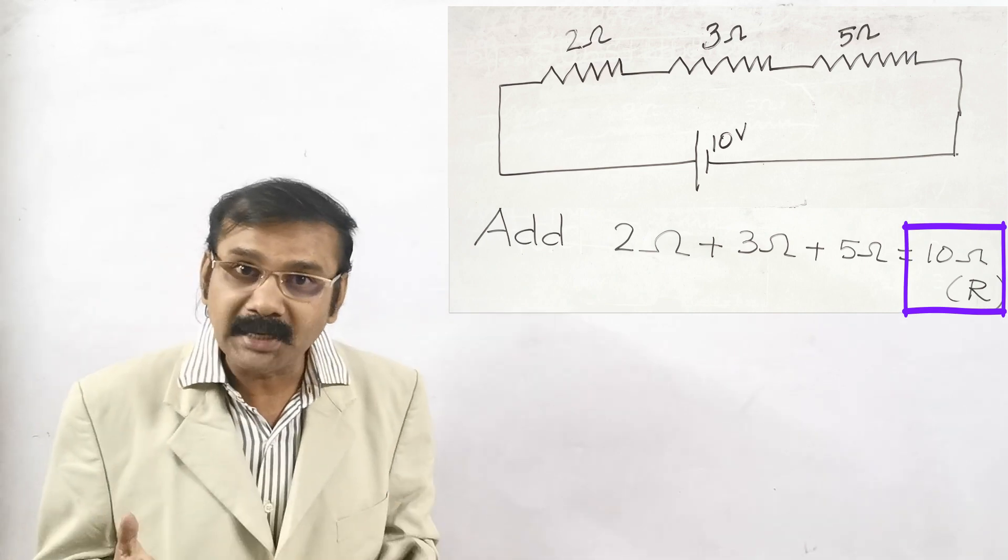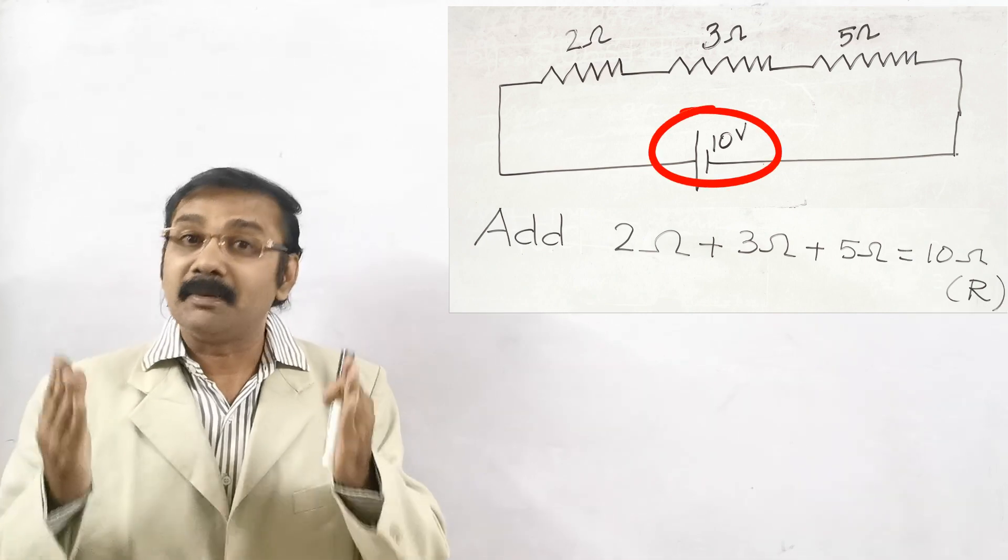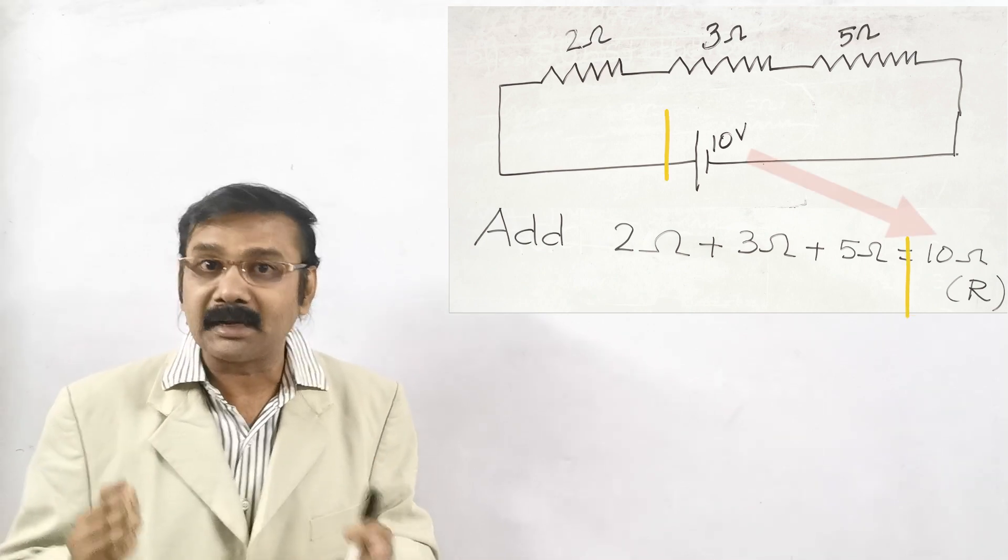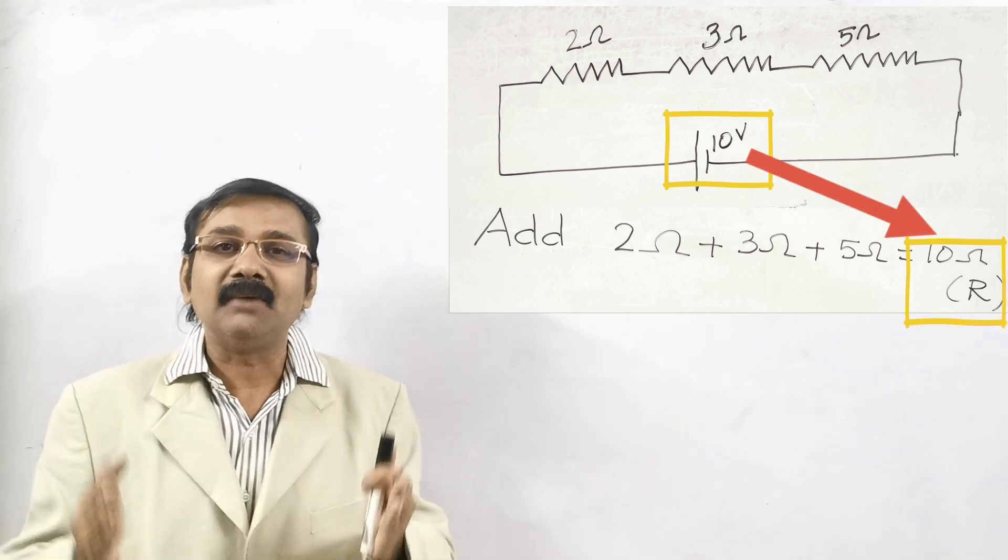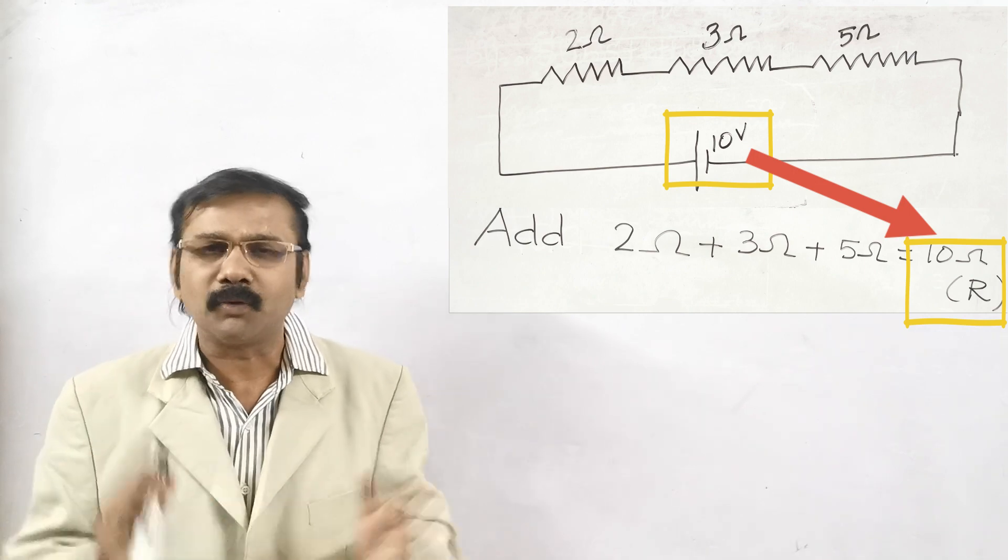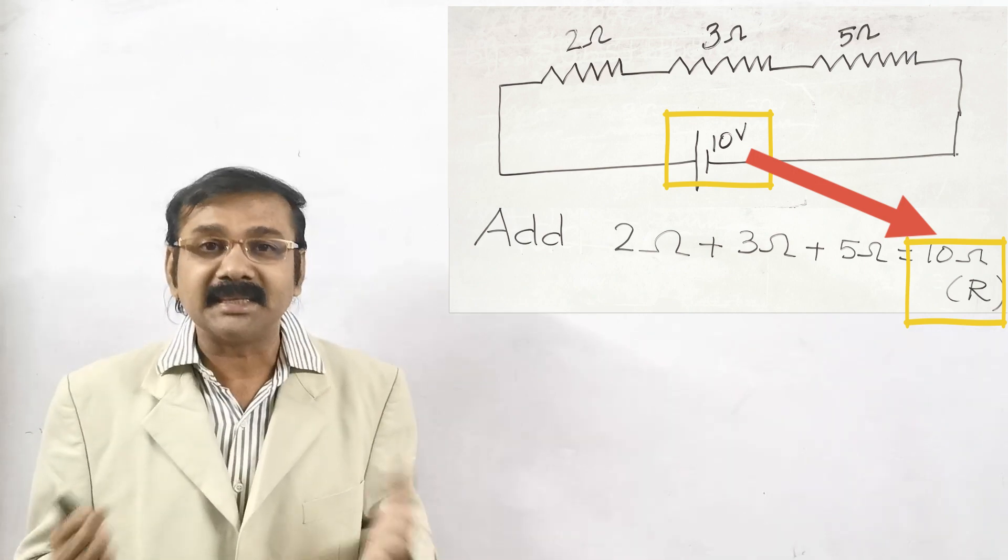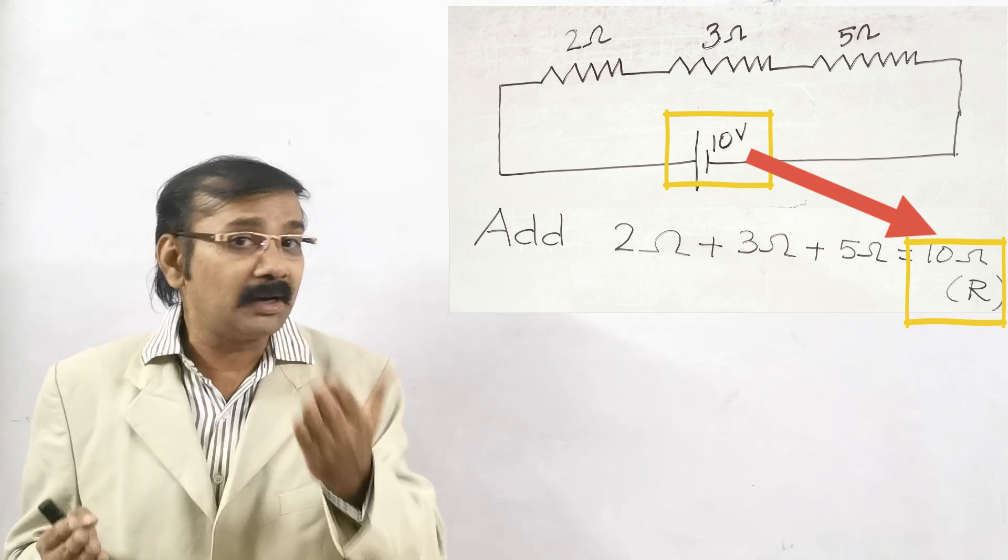Then you see the voltage, battery voltage. It is 10. When both are same, remember this point. When the resistance and voltage are same, then the current will always be 1 ampere. No doubt. For all the sums. When the voltage and resistance are same, then the current will be 1 ampere.